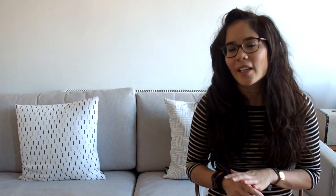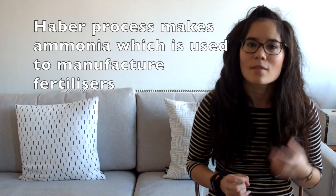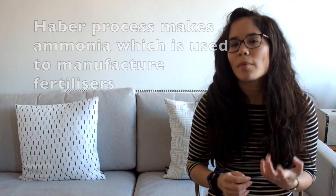Lastly just remember things like lightning. Lightning adds nitrates directly to the soil and remember the Haber process which I've done a video on in chemistry to do with equilibria. Remember the Haber process and that's the manufacture of ammonia is the primary way in which we can actually make nitrogen containing fertilizers.